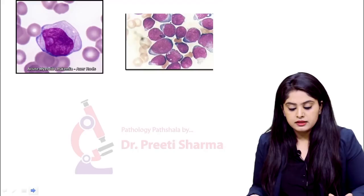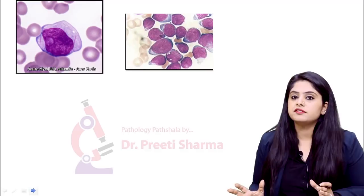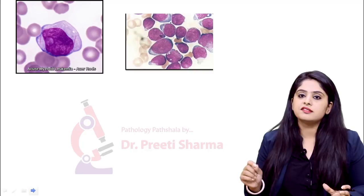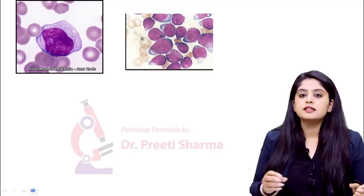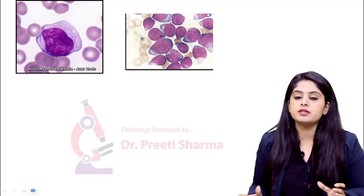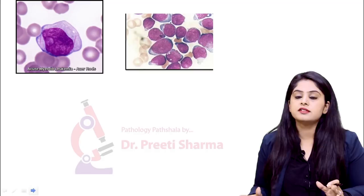Moving ahead — in the end these are the five types of cells that can form, but what was the first cell in the beginning of the series? The blast. The myeloid series will come from the myeloblast, and the lymphoid series will come from a lymphoblast. When it comes to image-based questions, you need to differentiate between a myeloblast and a lymphoblast. Let's see each one of these.